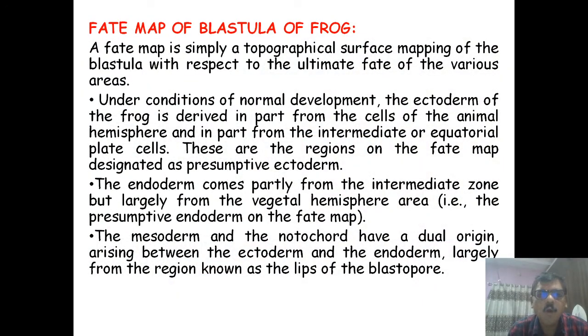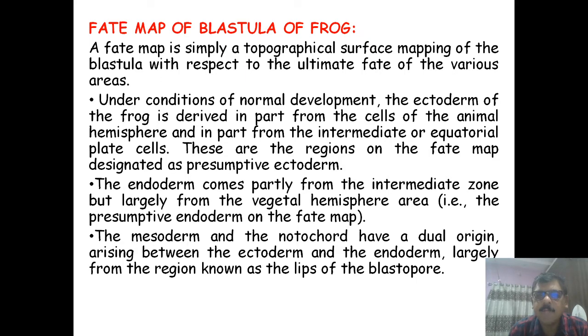Now, what is the Fate Map? The Fate Map is simply a topographical surface mapping of the blastula with respect to the ultimate fate of various areas. Under conditions of normal development, the ectoderm of frog is derived from the cells of the animal hemisphere and in part from intermediate or equatorial plate cells. These regions on the Fate Map are designated as presumptive ectoderm.